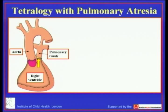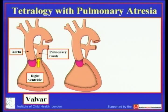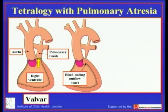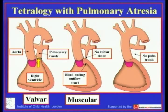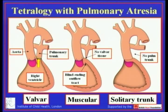Here are the various patterns at the ventriculo-arterial junction. In rare but existent instances, there is an imperforate pulmonary valve making the atresia valvar. In the majority of cases, the outflow tract itself is blind-ending, and the pulmonary trunk is either a fibrous strand or becomes patent immediately above the ventricular arterial junction — which contains no valvar tissue — hence giving muscular atresia. In other cases there is no pulmonary trunk, and in the absence of intrapericardial pulmonary arteries, this becomes a pulmonary arterial trunk.